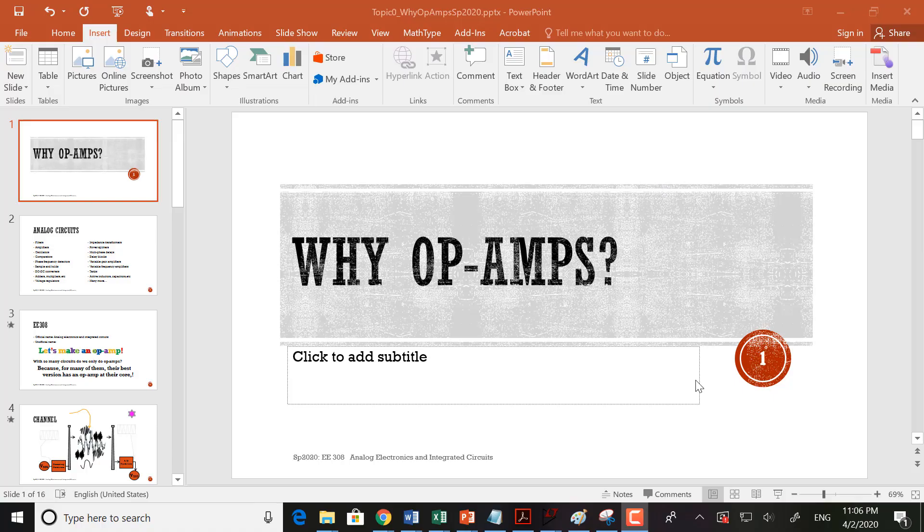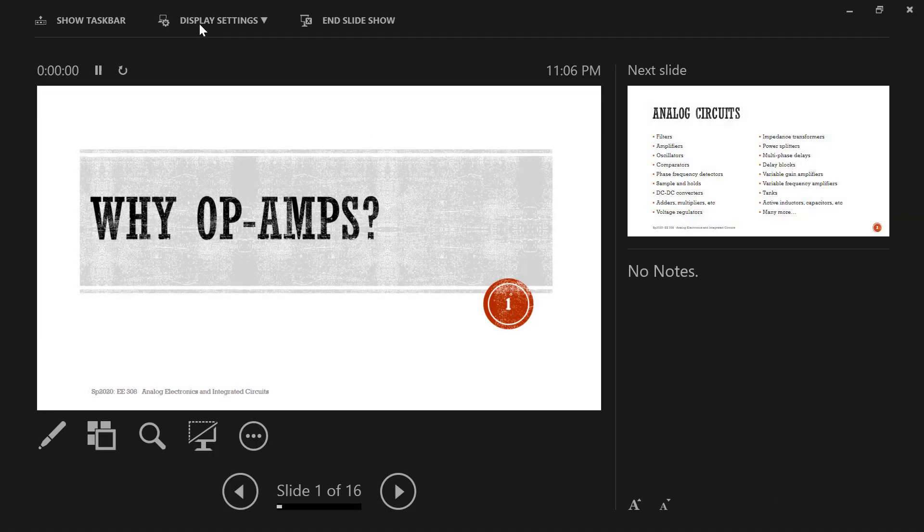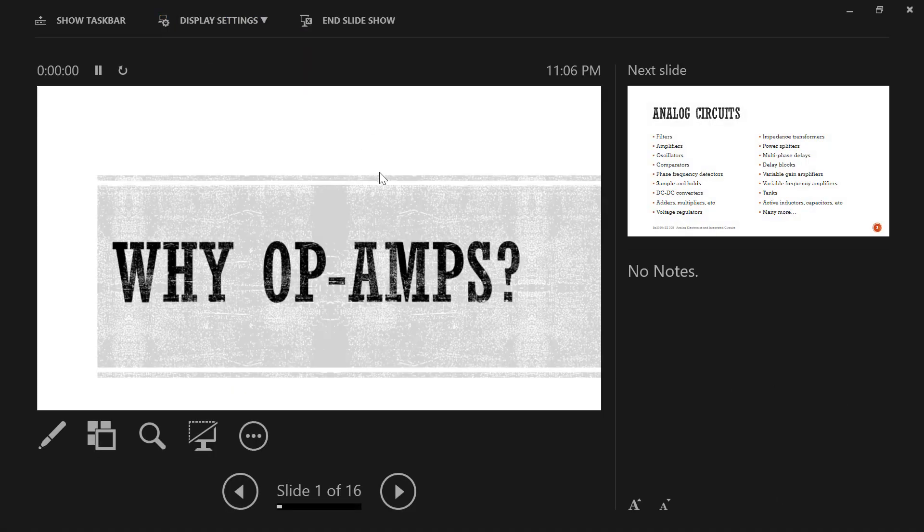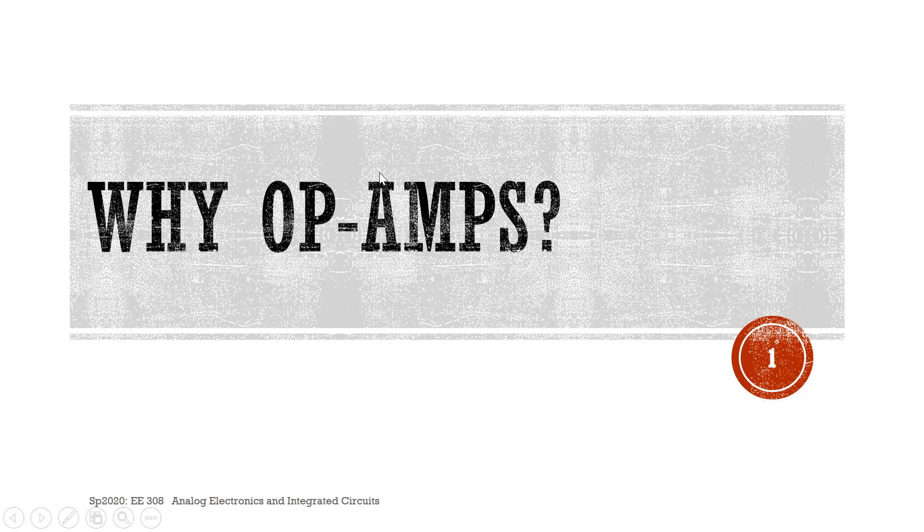This is the course introduction. This class is called Analog Electronics and Integrated Circuits. I mentioned already that we really don't do all that much with integrated circuits. We do build circuits, but we haven't really touched on the topics of how to put them directly into silicon and make them into an integrated slab of silicon that does all these fantastic things.